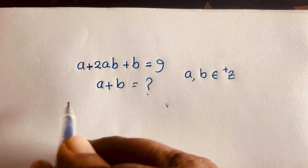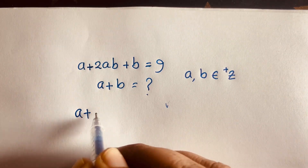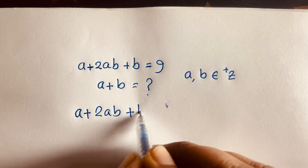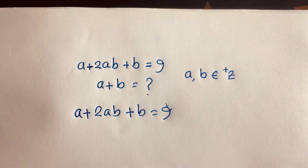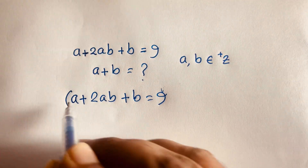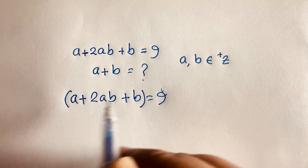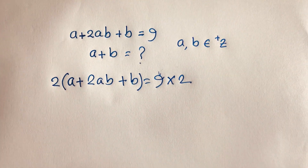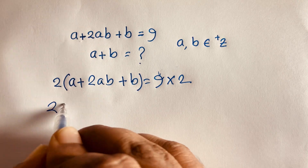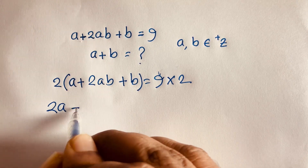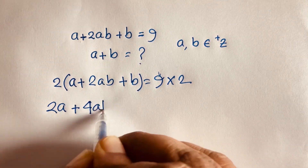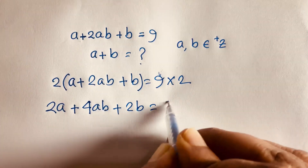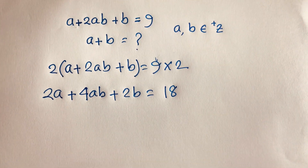Our question is a plus 2ab plus b is equal to 9. I multiply both sides by 2, so this equation becomes 2a plus 4ab plus 2b is equal to 18.